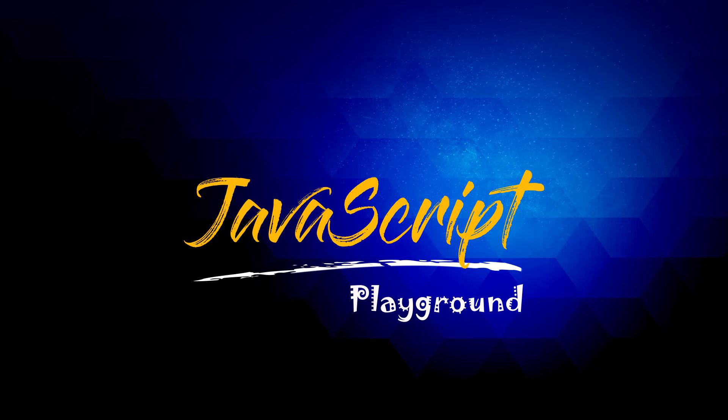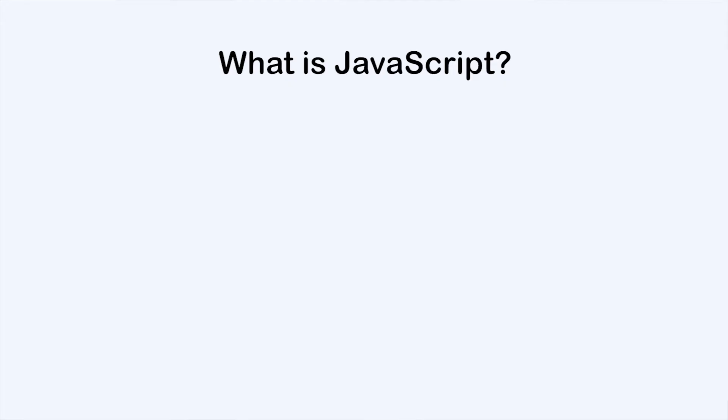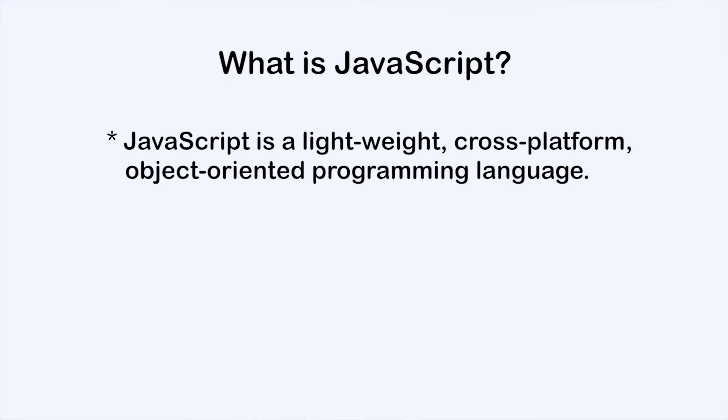Hi guys, and welcome to JavaScript Playground. Let's start with what is JavaScript. JavaScript is a lightweight, cross-platform, object-oriented programming language. Lightweight means that it doesn't take a lot of memory to run the code. Cross-platform means that it can be run on different platforms. And object-oriented means that it is based on object-oriented programming concepts.